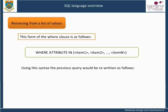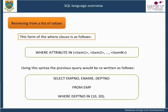Using this syntax, the previous query would be rewritten as follows: SELECT employee number, employee name, department number FROM employee WHERE department number IN (10, 20). The result of the query is just the same, but in many cases this form of the WHERE clause is both shorter and simpler to use.